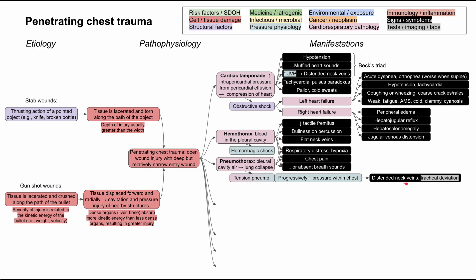It's important to differentiate: flat neck veins in hemothorax result from bleeding into the chest cavity causing low blood volume, while distended neck veins in tension pneumothorax result from progressively increasing chest pressure preventing systemic circulation from returning to the right heart — essentially the same mechanism as jugular venous distension. Tension pneumothorax can also cause obstructive shock, with hypotension and tachycardia.